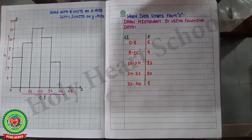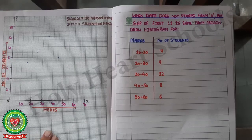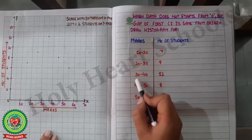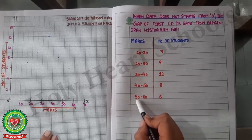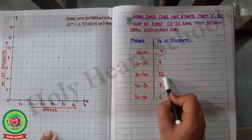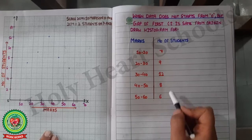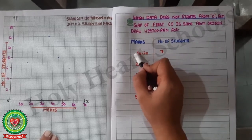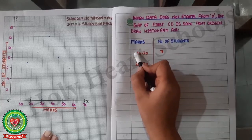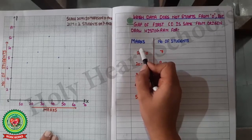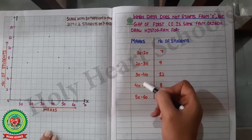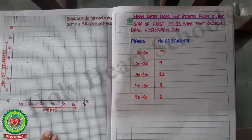This completes the first type of histogram. Now for statement two: draw a histogram for marks 10–20, 20–30, 30–40, 40–50, 50–60 with number of students 7, 9, 12, 8, and 6. Here data does not start from 0 — it starts from 10. The gap between each class interval is 10, and the gap from the origin is also 10, so this is case two.